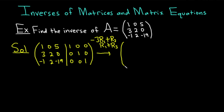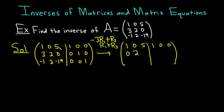Now we perform our operations. The first row is unchanged: 1, 0, 5, then 1, 0, 0. Multiplying the first row by negative 3: negative 3 times 1 is negative 3, so negative 3 plus 3 is 0. Then 0 plus 2 is 2. Negative 15 plus 0 is negative 15. Negative 3 plus 0 is negative 3. The rest are the same: 0 plus 1 is 1, and 0 plus 0 is 0.